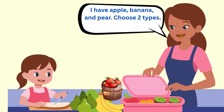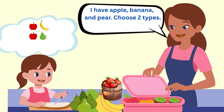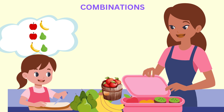Zuri begins to think of all the possible pairs of fruits she can choose. She could take apple and banana, or apple and pear, or banana and pear. Zuri suddenly realizes that this is related to the same topic she is doing at school — combinations.